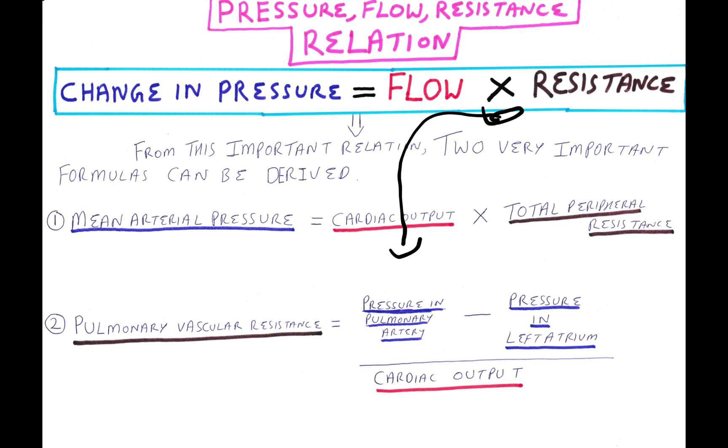This formula can also be written as resistance equals change in pressure divided by flow. Hence, this is the formula of pulmonary vascular resistance.